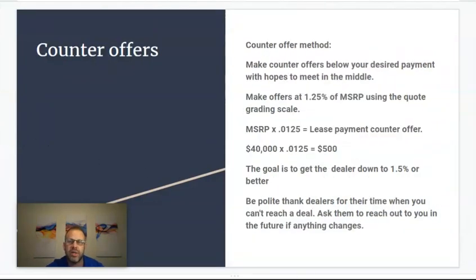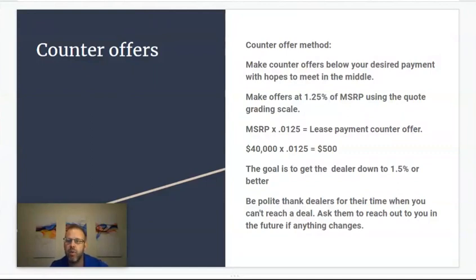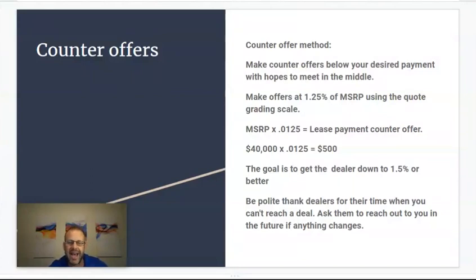Then we move on to the actual counter offer method. When you're making counter offers, you want to make an offer below your desired payments with hopes to meet the dealer in the middle. I like to make counter offers at 1.25% of MSRP, using the quote grading scale we learned a few lessons back. The way that works is you just reverse it — instead of dividing the payment by the MSRP to get the percentage, you multiply the MSRP times the percentage you're looking for. The 1.25% is below what we're hoping to get the dealer to. That's actually where dealers were leasing cars about three years ago, so it makes sense to the dealer — that's what you're used to.